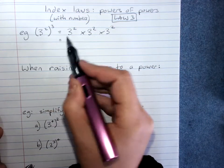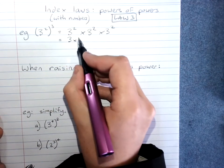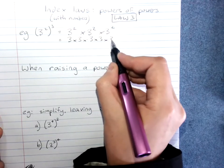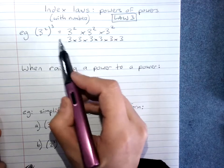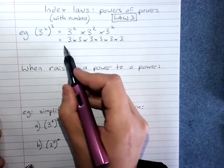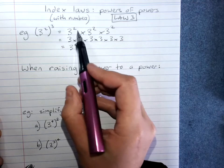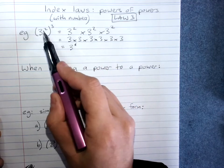If I wanted to, I could expand this even more because each 3 squared is 3 times 3. What's the shortcut? I ended up with 3 to the power of 6 and that was 3 lots of 3 squared.